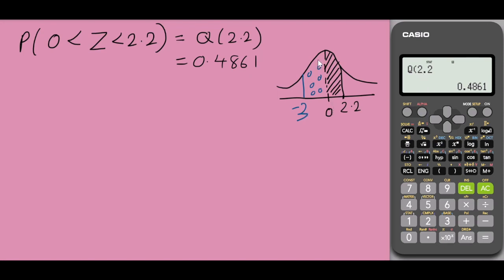So this area over here on my left-hand side would be the probability of Z between minus 3 and 0.